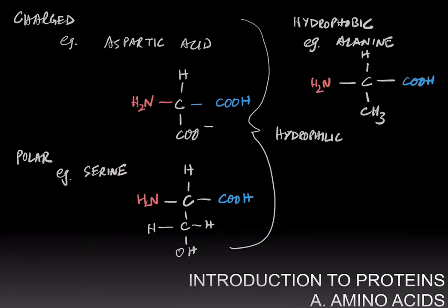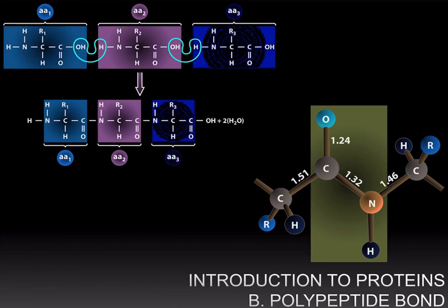Amino acids can be linked together to make proteins or polypeptides. And the reaction in which you form a polypeptide, you link the carbon of the carboxyl group of one amino acid to the nitrogen of the amino group of another amino acid, and release water.